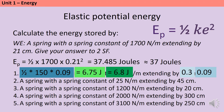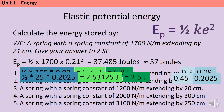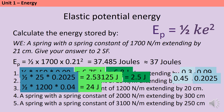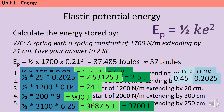For question two: 45 centimetres is 0.45 metres; 0.45 squared is 0.2025. Half times 25 times 0.2025 gives 2.53125 joules, which rounds to 2.5 joules. Questions three and four give quite clean answers: 24 joules is already to two significant figures and 900 joules is to one significant figure. For question five the answer is 9687.5 joules, which rounds to 9700 joules.